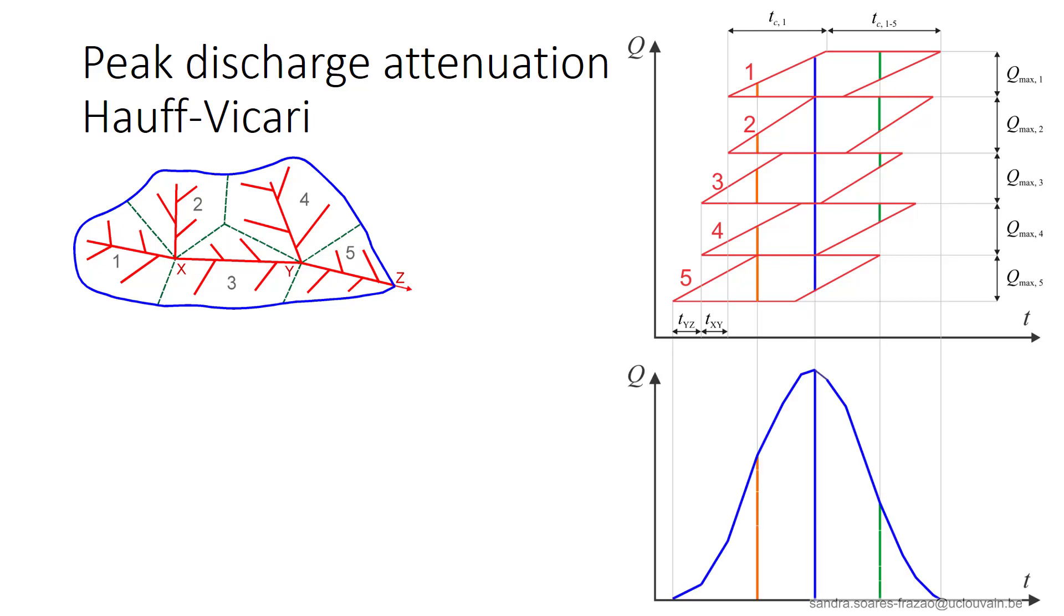Finally, the resulting hydrograph is simply the addition of the contribution of the five parallelograms. These lines represent some examples of these additions, where we see here, for example, for the orange line, that not all the catchments contribute completely. So we have here the final result. The interesting point is that the maximum discharge of the hydrograph is lower than the addition of the maximum discharges of the five parallelograms. So the method allows taking into consideration the lag between the different subcatchments.